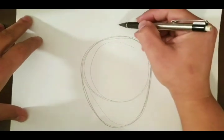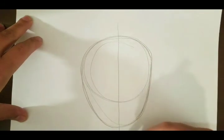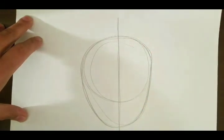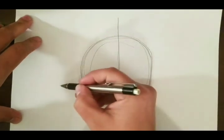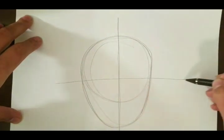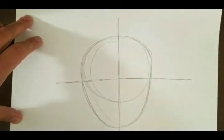We're going to draw some guidelines. The first one, we're going to draw a vertical line down the center of the face, just so we know the half and half, the right from the left. Then halfway through that line, we're going to draw a horizontal line.